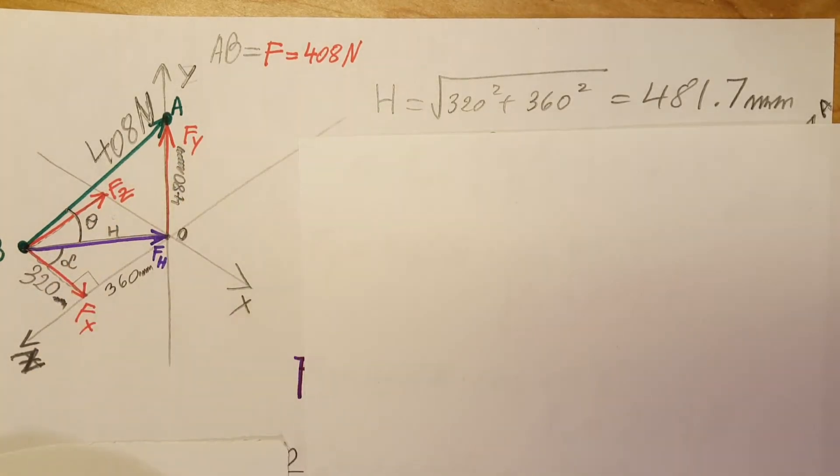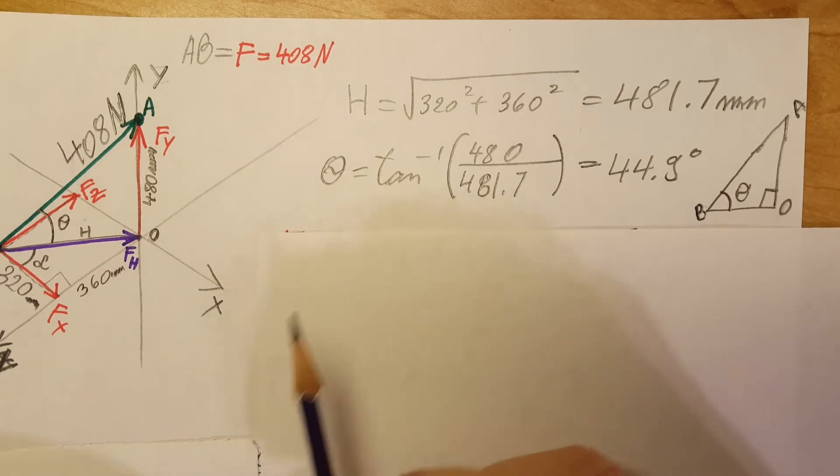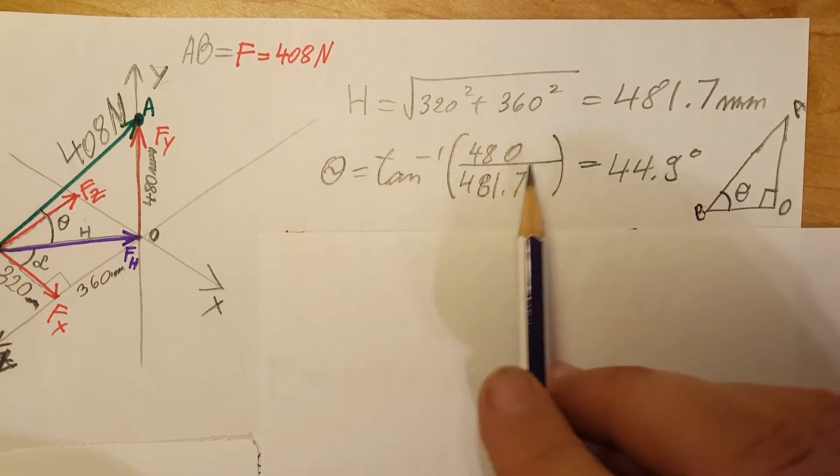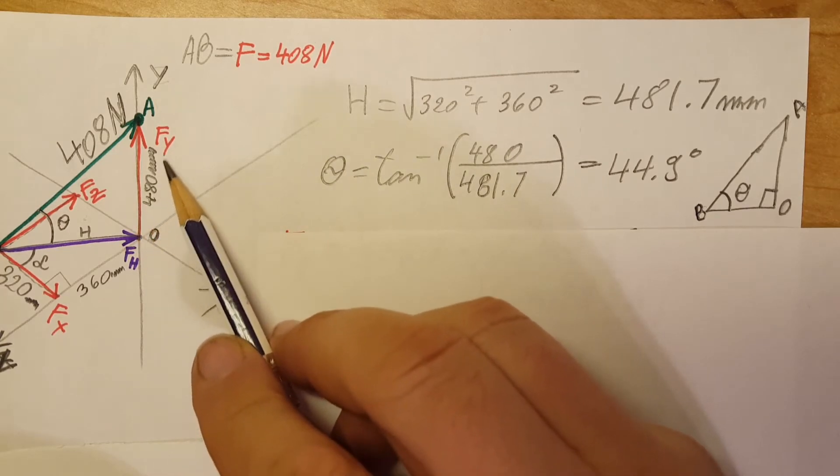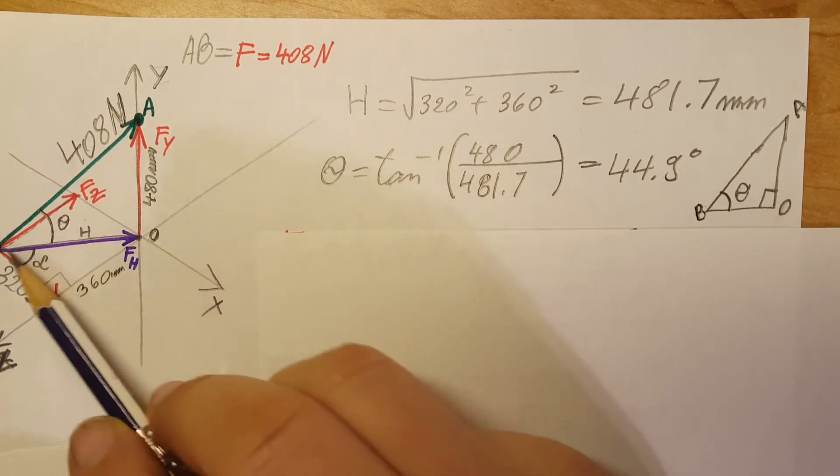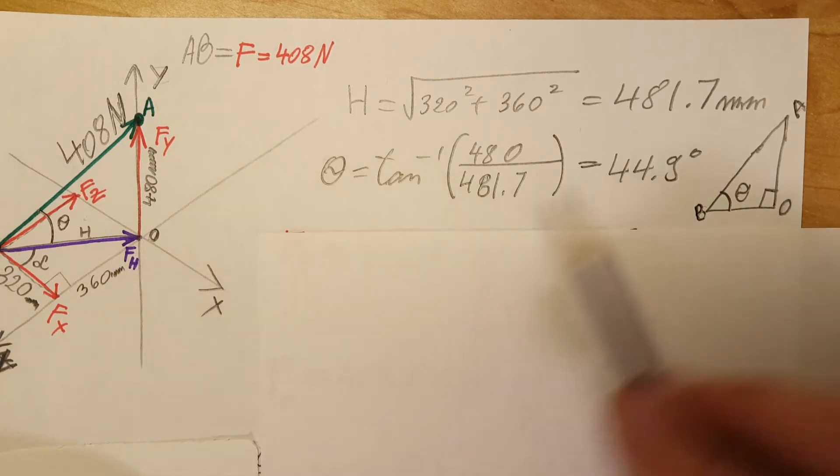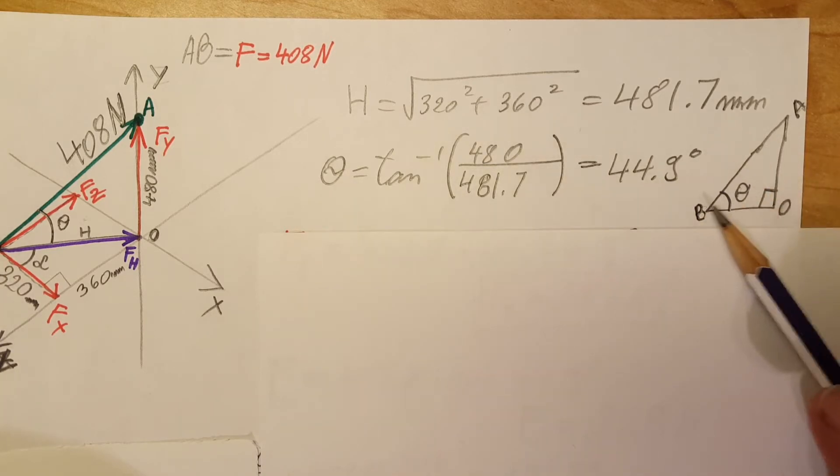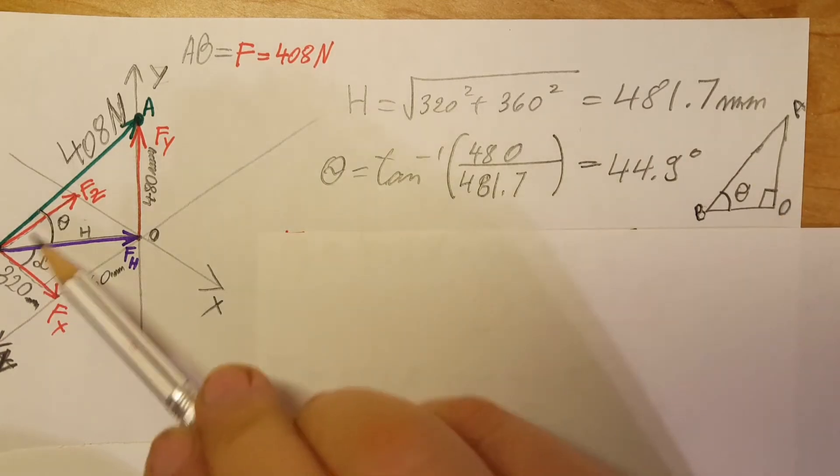For this we're going to use inverse tangent where we're going to plug in 480 over the H that we just found, 481.7, and we're going to have a 44.9 degree angle for theta. And here's a little redrawn triangle from the one that we are working with: B, O, and A.